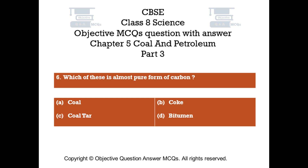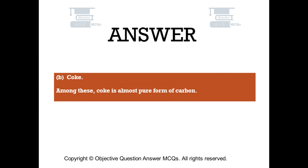Question number 6. Which of these is almost pure form of carbon? Option A: Coal. Option B: Coke. Option C: Coal tar. Option D: Bitumen. The right answer is Option B, Coke. Among these, coke is almost pure form of carbon.